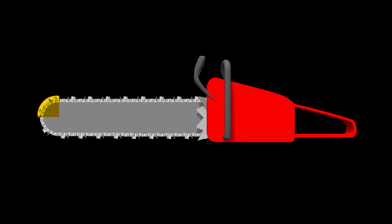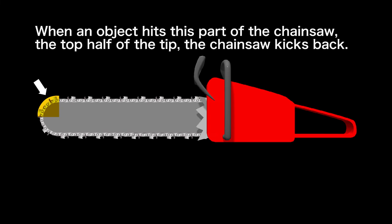When an object hits this part of the chainsaw — the top half of the tip — the chainsaw kicks back. Now I'd like to consider why it would be so dangerous.